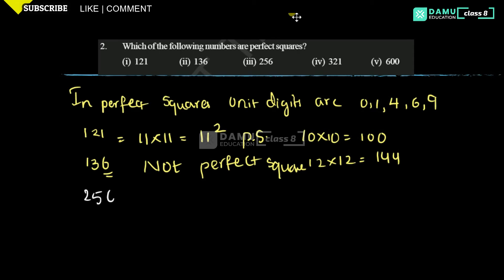256: unit digit is 6. 256 will be 16 into 16. We check: 16 into 16 = 256. So this is a perfect square number — 16 squared.